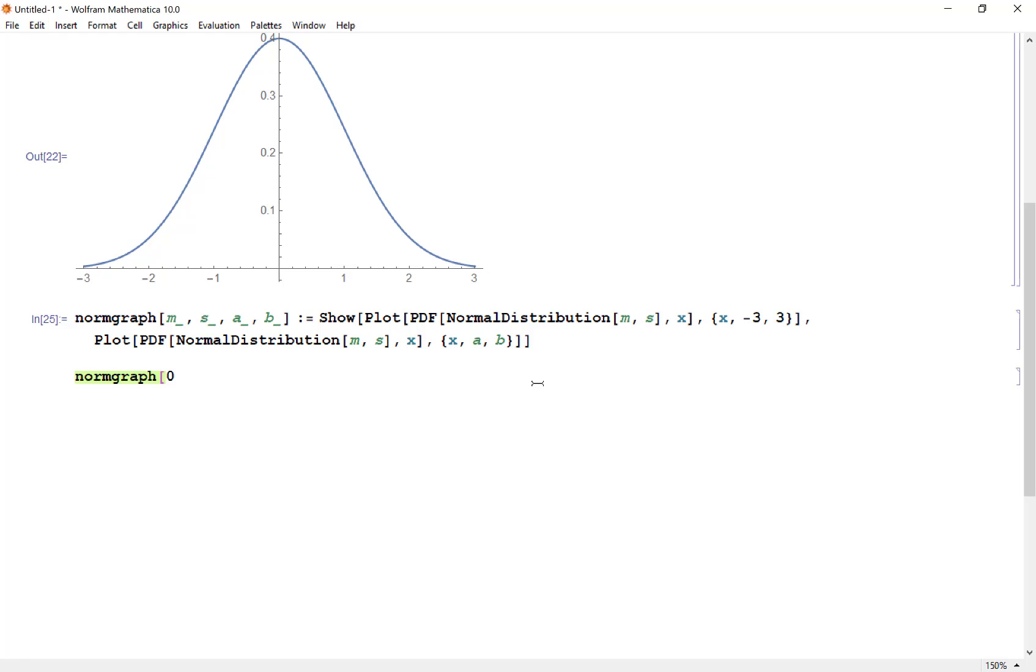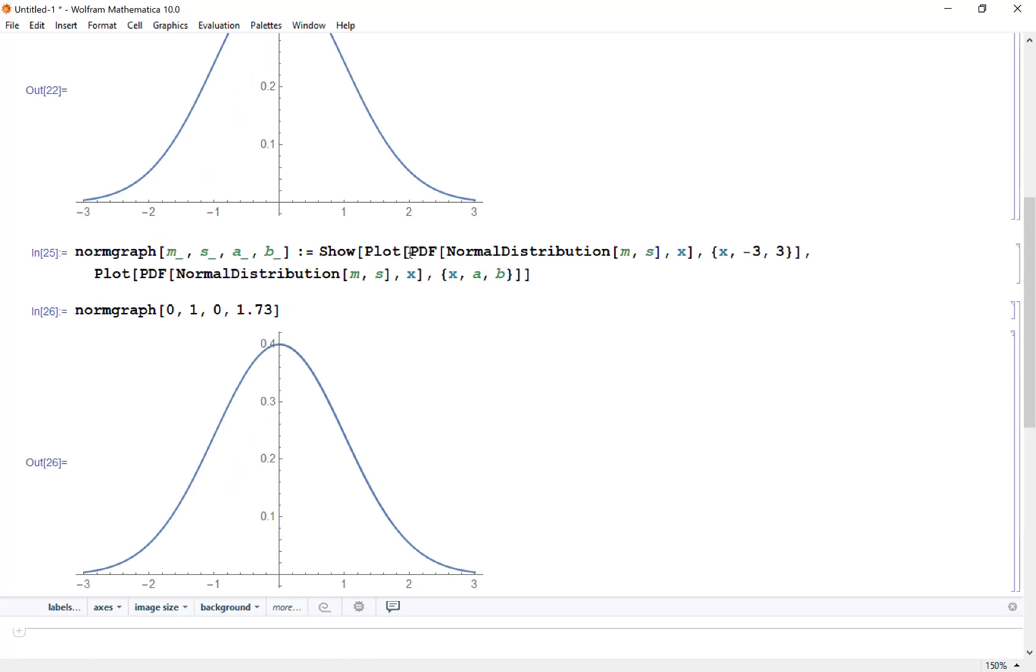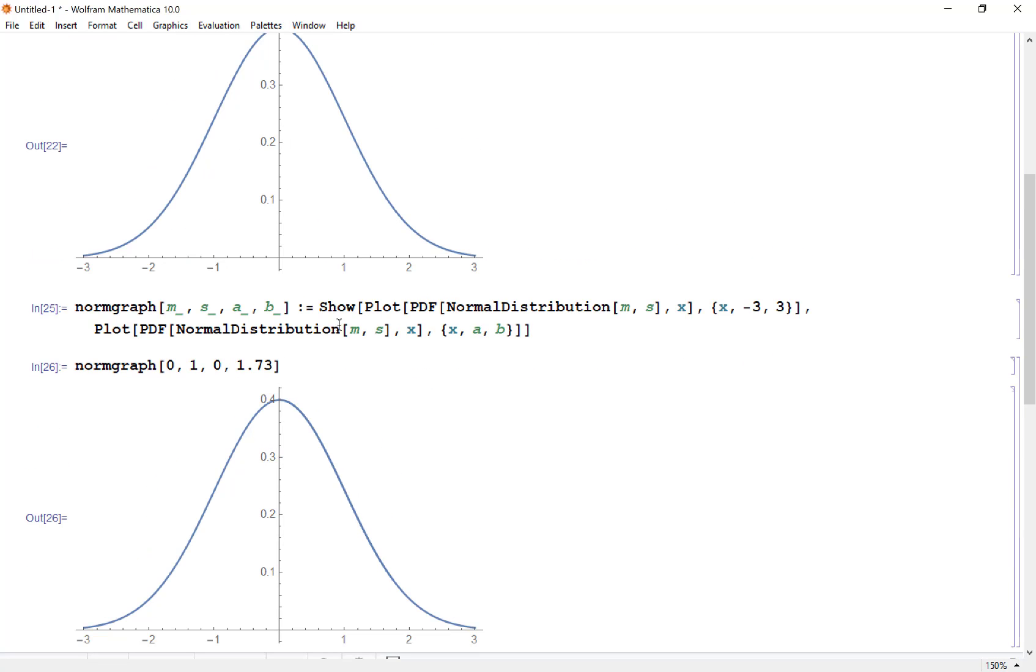All right, so now if I say normgraph 0,1,0,1.73 for example, well I just get the same picture. What I'm doing is I'm overlapping two curves. I have the full curve and I only have a part of the curve which goes from a to b and the reason I did that is because I want to add in some things here, for example I want to fill to the axis so that'll give me the area under the curve.